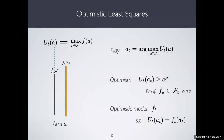Optimism holds here by the same reasoning as before: u-t of a-t is going to be bigger than u-t of a-star, which is bigger than F-star of a-star. In particular, the optimistic upper confidence bound value of the action I play always upper bounds the maximum reward. That's because F-star is in F.